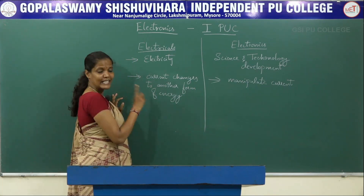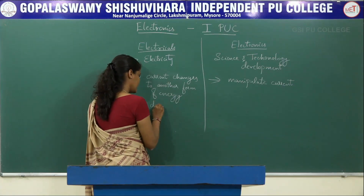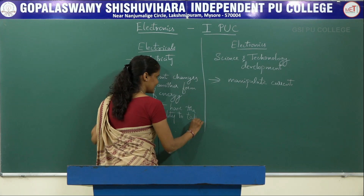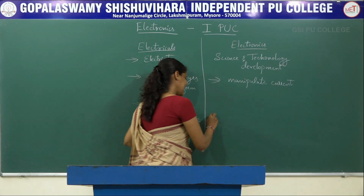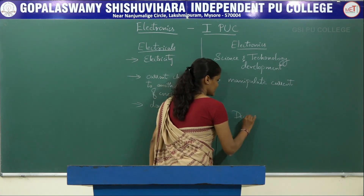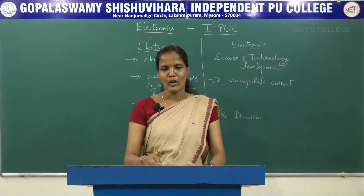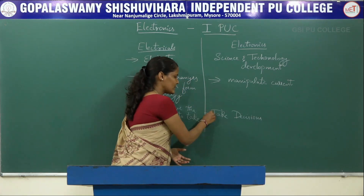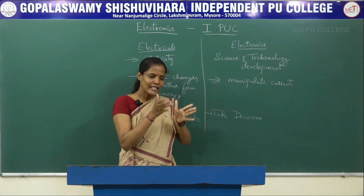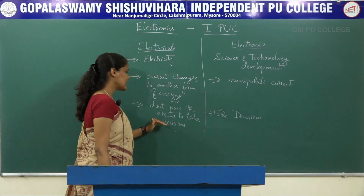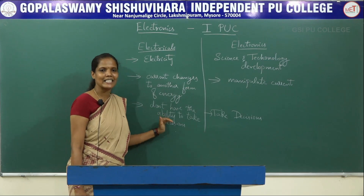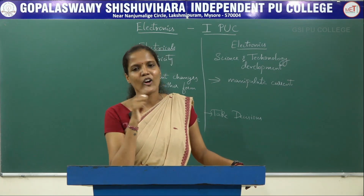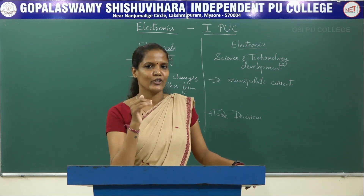The next difference is that electrical circuits don't have the ability to take decisions. Whereas electronics can take decisions. For example, the doors in a mall — the door decides whether a person is standing in front of it or not, and opens automatically. But electricals, like a tube light or ceiling fan, can only be turned on or off with a switch. They do not take any decision by themselves.